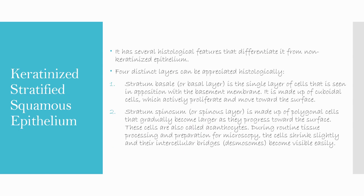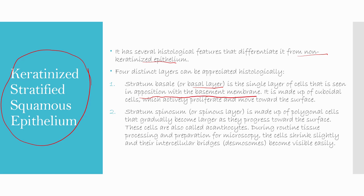The keratinized stratified squamous epithelium has several histologic features that differentiate it from non-keratinized epithelium. Four distinct layers can be appreciated histologically. The stratum basale or basal layer is a single layer of cuboidal cells seen in apposition with the basement membrane. These cells actively proliferate and move forward towards the surface, increasing the thickness of the epithelium.